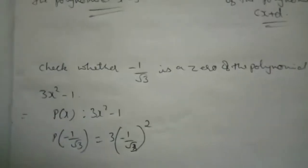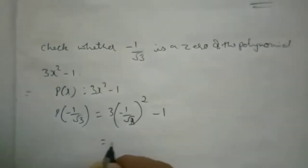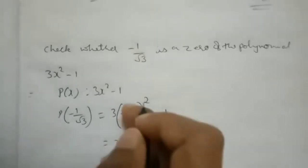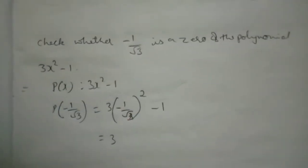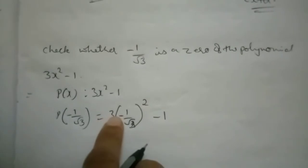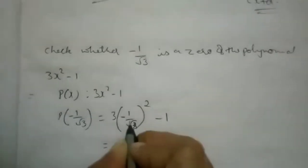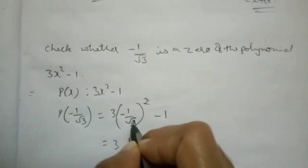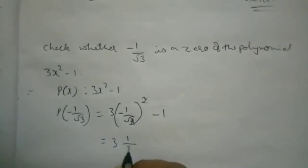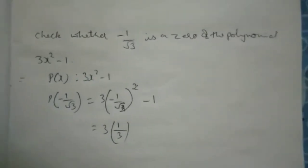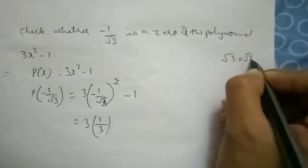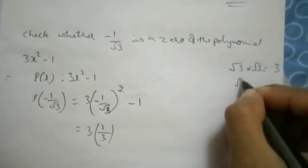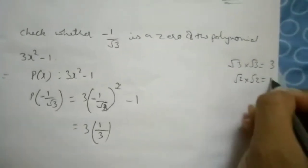When you do the whole square, minus times minus is plus, so 1 squared is 1 and root 3 squared gives 3 (since square root and square cancel). So we have 3 times (1/3) minus 1. The 3s cancel, leaving 1 minus 1.